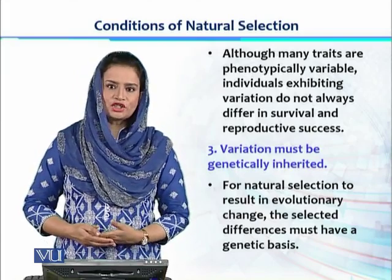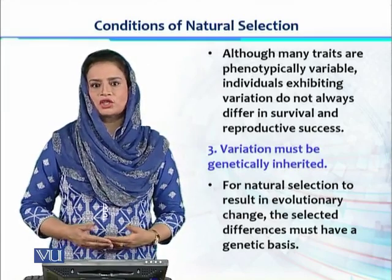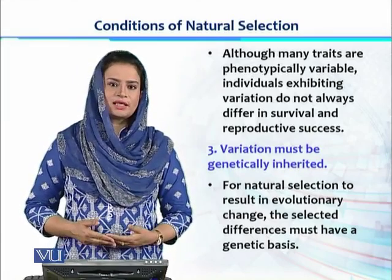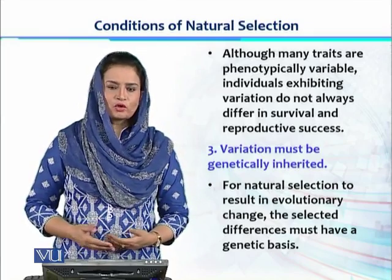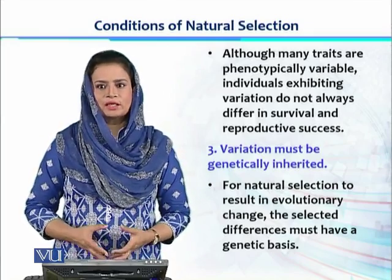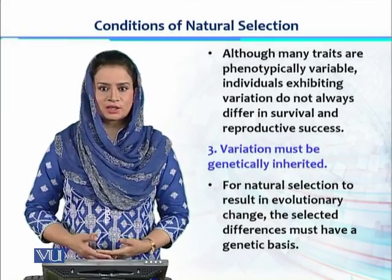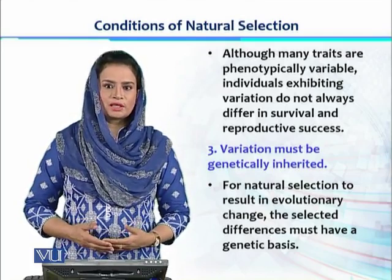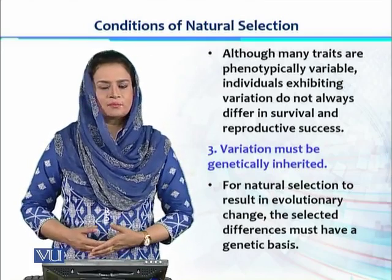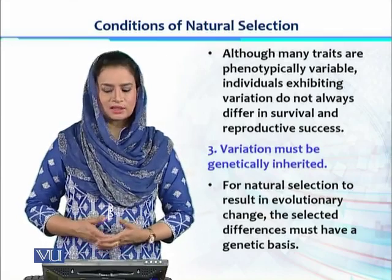The third condition of natural selection is that all variations present in these individuals must be genetically inherited. So every variation which has been acquired because of environmental pressures or acquired through natural selection must be genotypically present — it must be part of their DNA — so it can be transferred from one generation to the next generation.